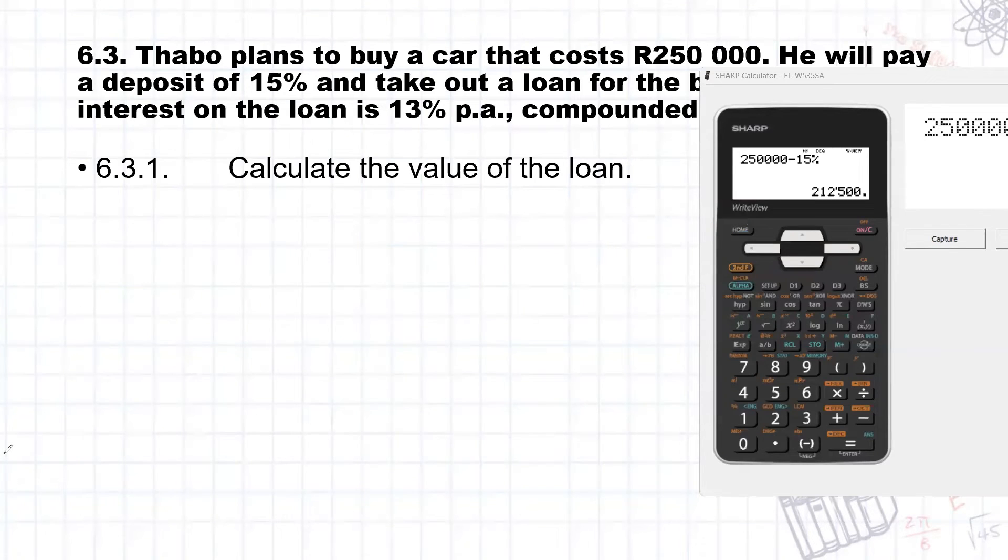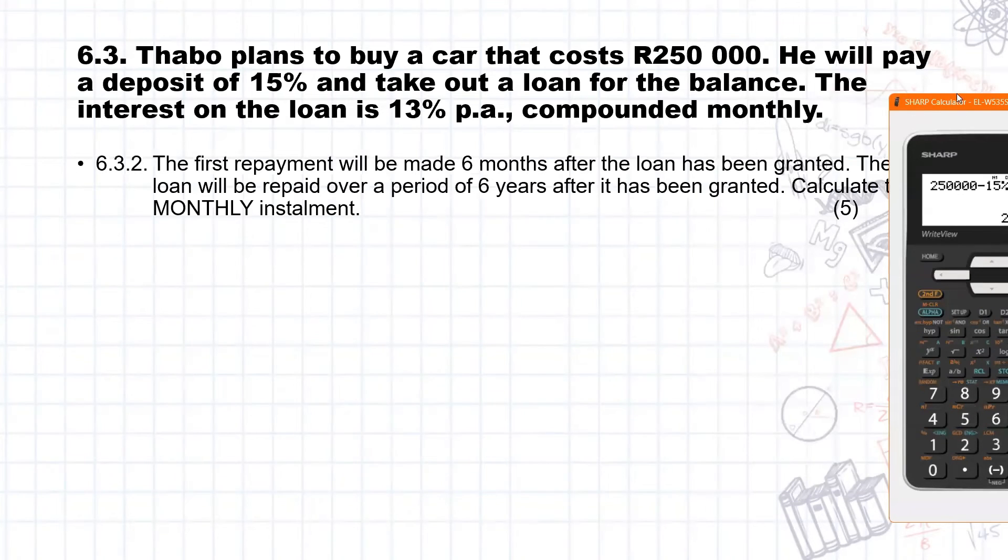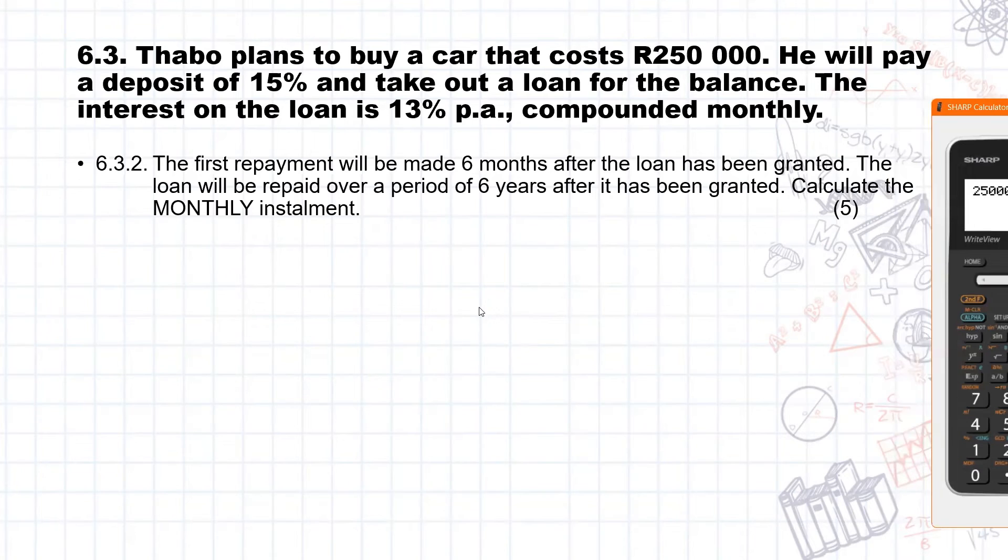Now part two of this question says the first repayment will be made six months after the loan has been granted. The loan will be repaid over a period of six years after it has been granted. Calculate the monthly installments. So the first thing that we need to do is find out what is the present value that Tabo is actually going to pay, because he's going to earn 13% over the six months where he's not paying any money back. So that is just A equals P times one plus I to the power of N compounded monthly. We're looking for A. Our P value is the loan amount, so that was R212,500.